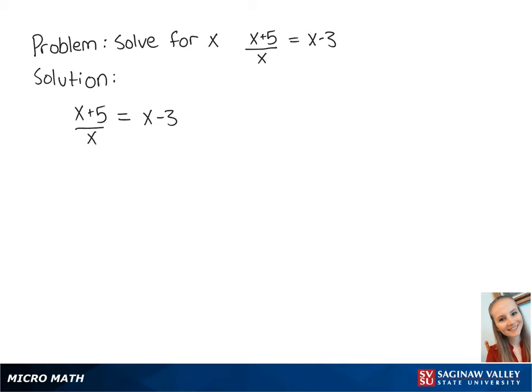Let's solve for x in the equation x plus 5 over x equals x minus 3. To remove the fraction on the left side, we'll multiply both sides by x.